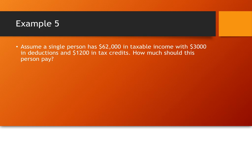So, I want you to try to calculate what's going to happen if we have a single person who makes $62,000 and has $3,000 in deductions and $1,200 in tax credits. How much should this person pay if that's the case? Push pause on the video and try this on your own.